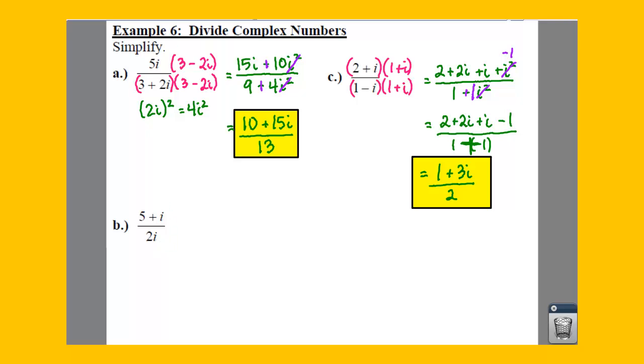So all you have to do in this case is just multiply top and bottom by just an i. And if you do that, when you multiply along the top, well, you are taking an i times the 5+i. So this gives you a 5i plus i squared. And on the bottom, a 2i times i, like so.